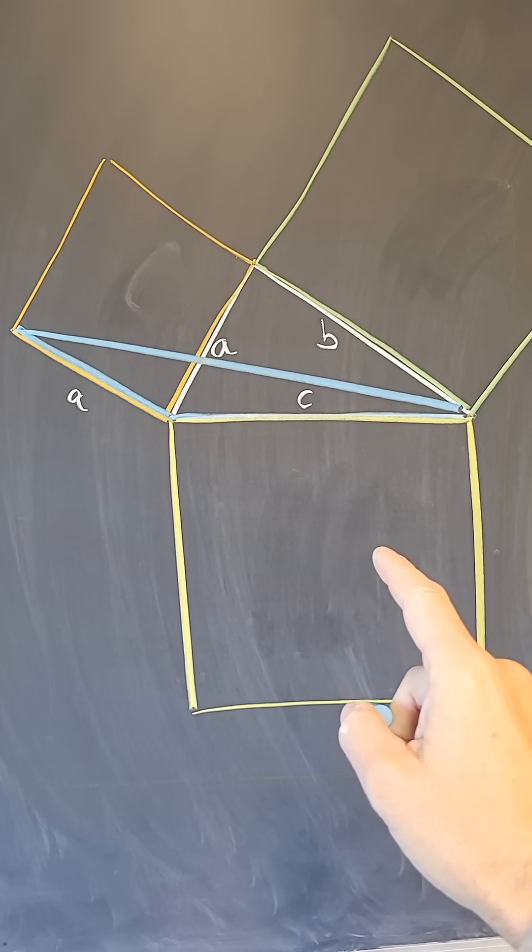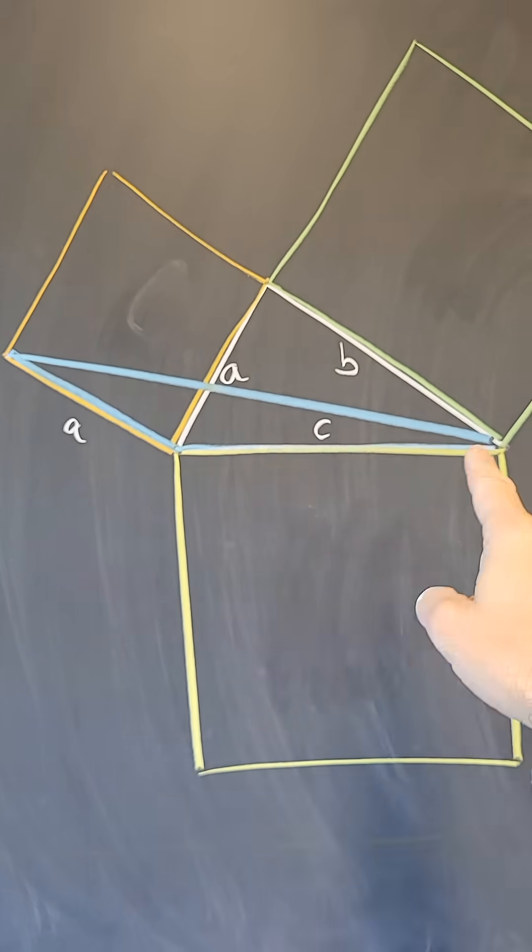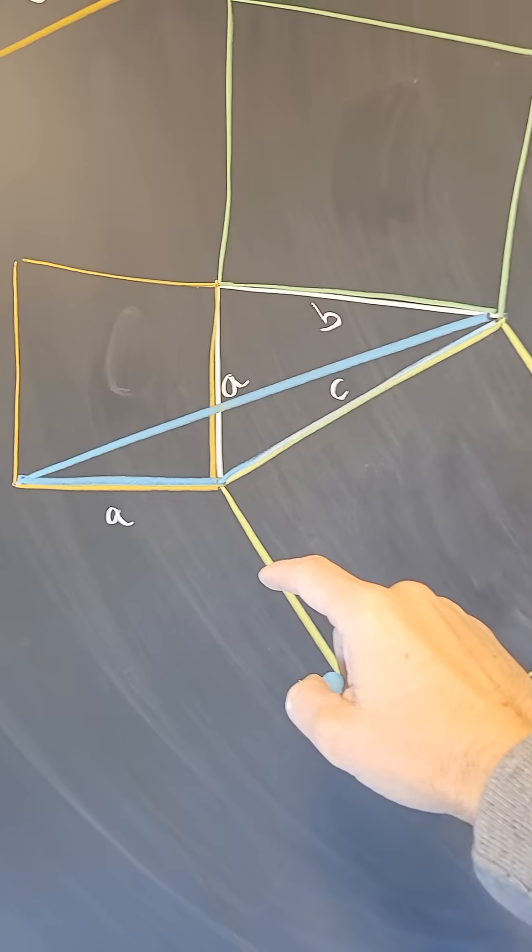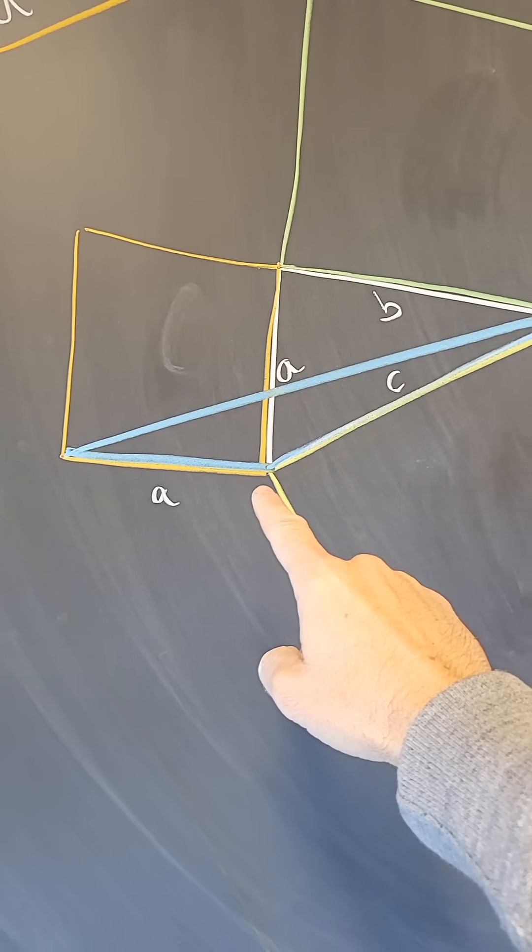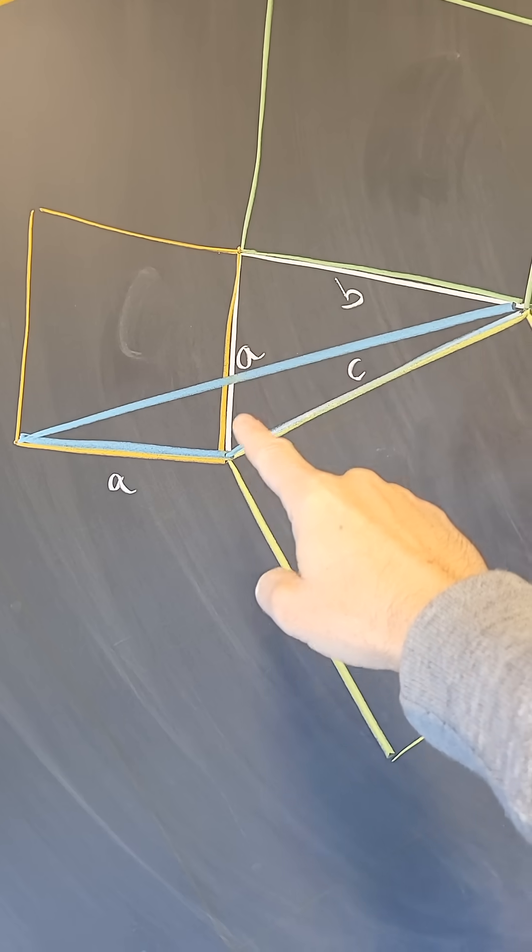Euclid's proof goes as follows. Draw a blue triangle like so. And notice that if we look at it like this, then that triangle has base A. The height is A.